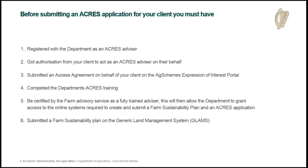Then you have to get authorization from your client to act as an ACRES advisor on their behalf. That is done through a text message to the system where you inform the department and the department sends a text message to the advisor and he answers yes. That links you to the advisor for the particular scheme.